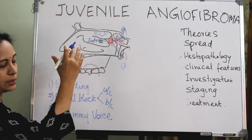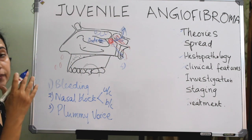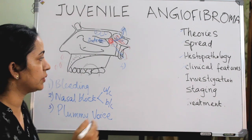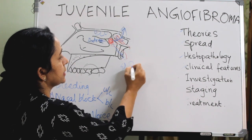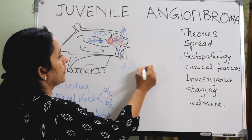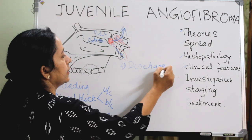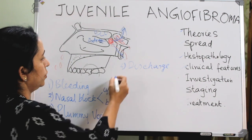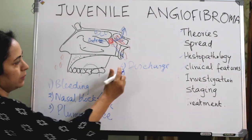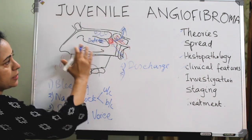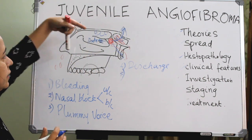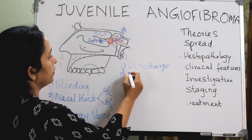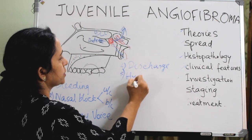Because the nasal cavity is filled with the mass, there is no drainage of secretions, leading to abundant nasal discharge which can become secondarily infected, causing sinusitis. The mass also blocks the olfactory area, resulting in hyposmia or anosmia.